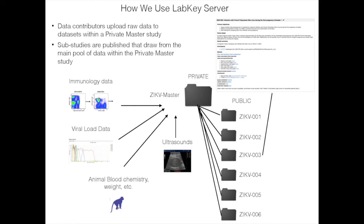So how do we use LabKey Server technically to host this? We use the study module as our central focal point. We have a master folder — the Zika master folder — set to private permissions within LabKey. The private folder serves as the primary warehouse for upload of data from individual data contributors, including those generating viral load data from tabular machine output, immunology data, and animal health metrics like blood chemistry and weight. From there, we use the study module's publish feature to publish individual public folders, broken out by study design — so ZikaVO1, O2, or O3 each have specific research goals and are continuously being populated in real time from the private master folder.